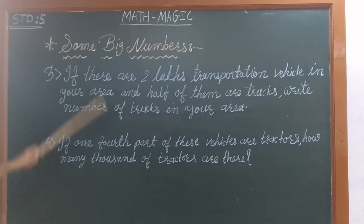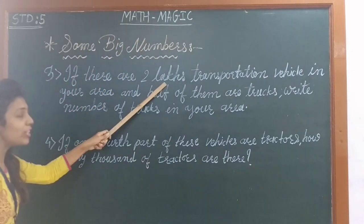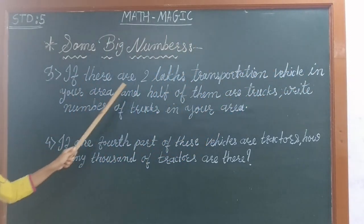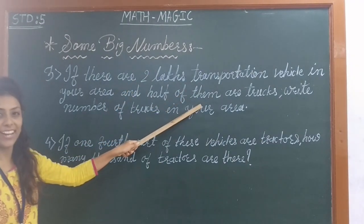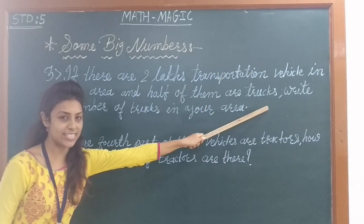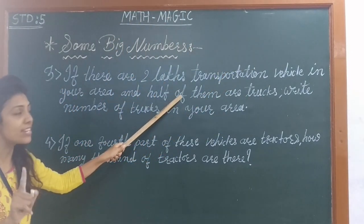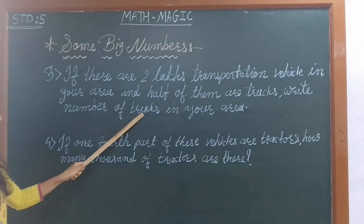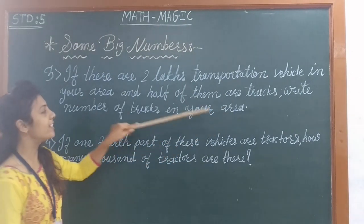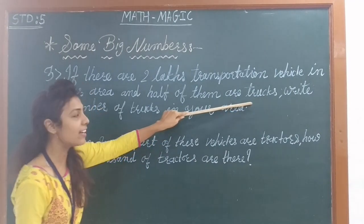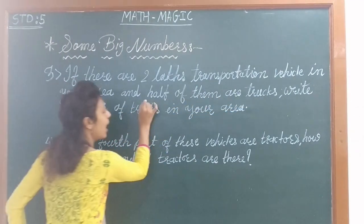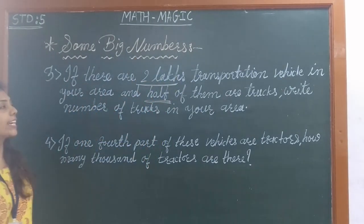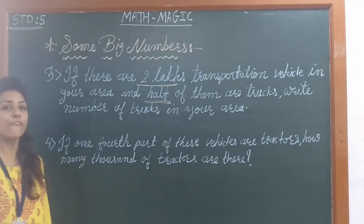Number three: if there are two lakhs transportation vehicles in your area, and half of them are trucks, write the number of trucks in your area. So we have to write the number of trucks. How many trucks are there? Half of two lakhs — total vehicles are two lakhs.